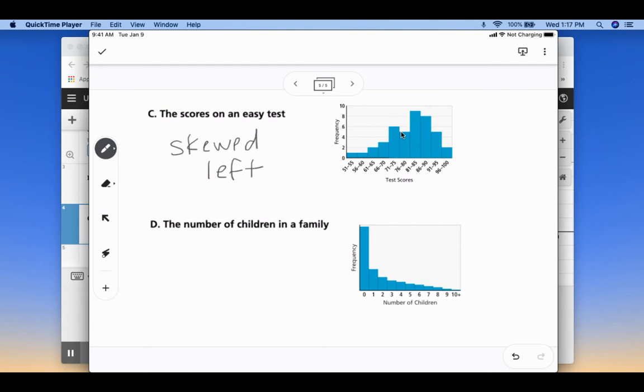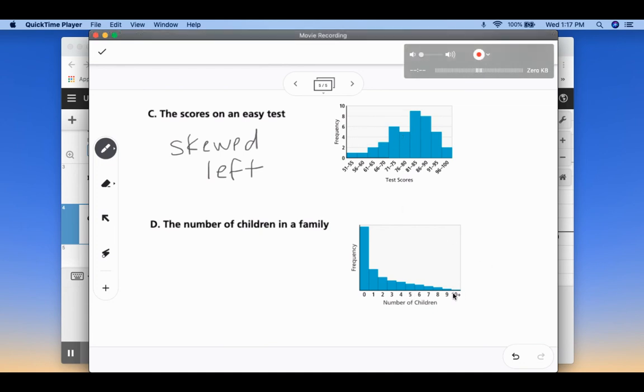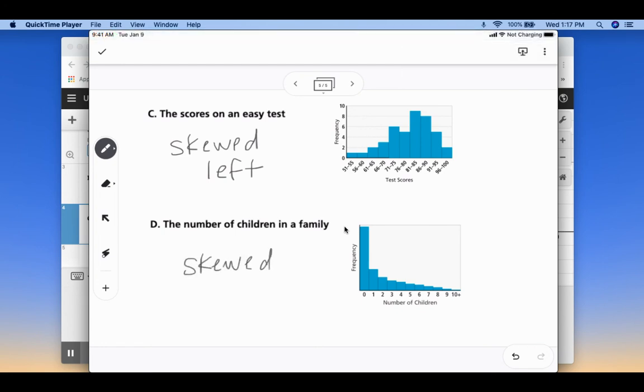And then our last example is the number of children in a family. So we can see by the histogram here that we have a lot of people that have zero children or one children or two children. And then we're going to have way fewer people that have over 10 children. And it's going to get fewer as we get more and more. So this would be skewed right.